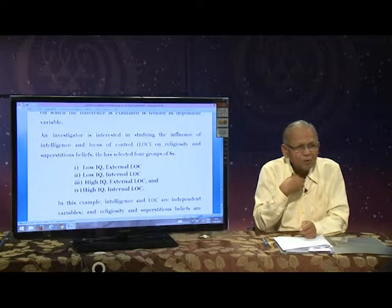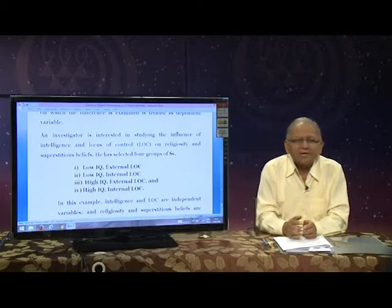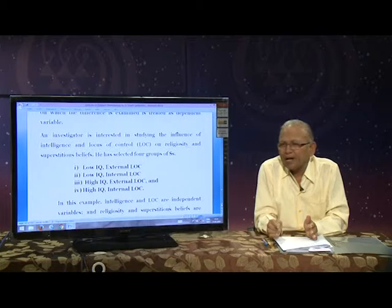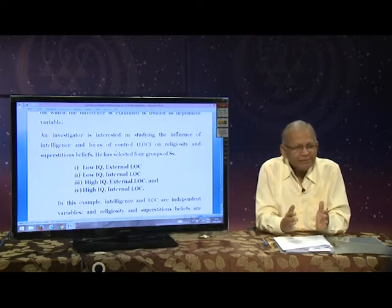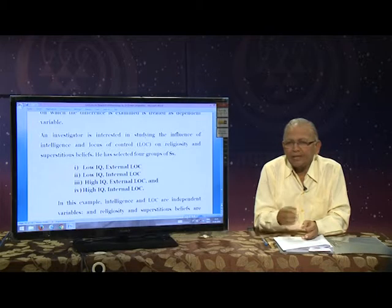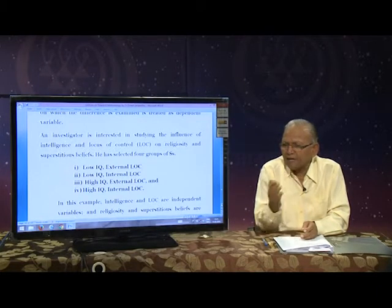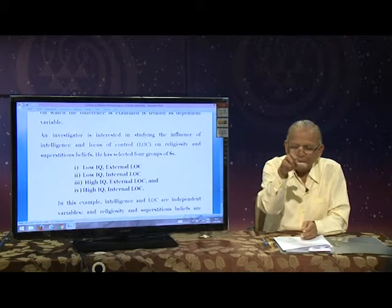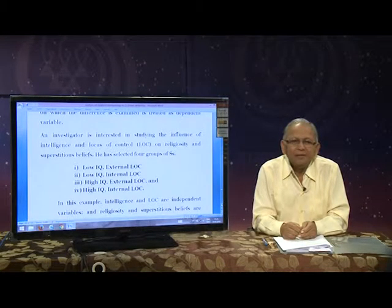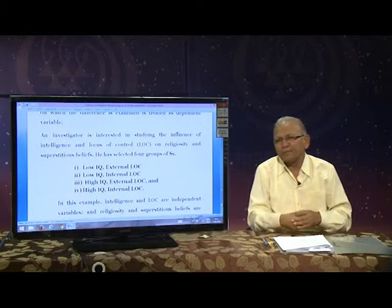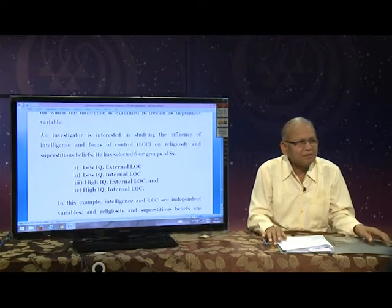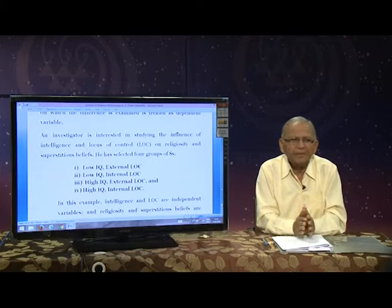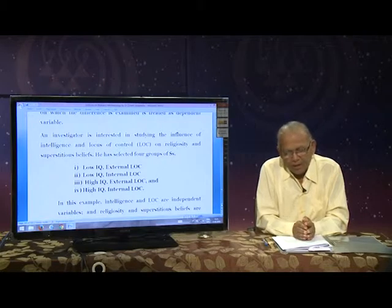In psychology, we have a very good concept called locus of control. It is of two types: one is internal locus of control and the other is external locus of control. The role was developed by Julian B. Rotter (R-O-T-T-E-R), who developed this concept and prepared a scale with 29 items, of which six are fillers and only 23 items are scored.